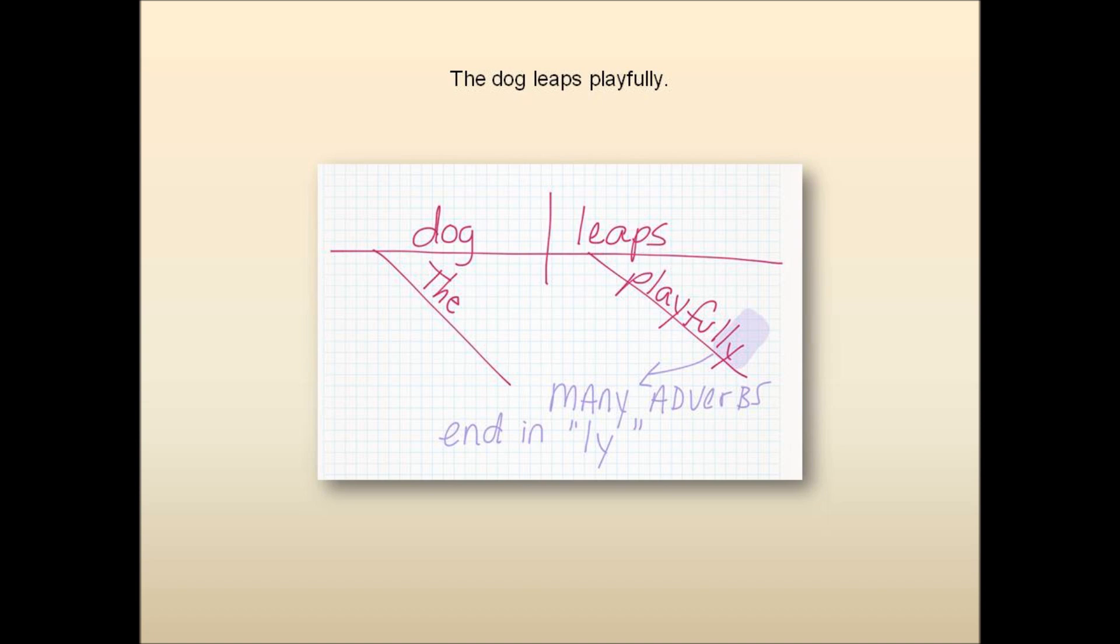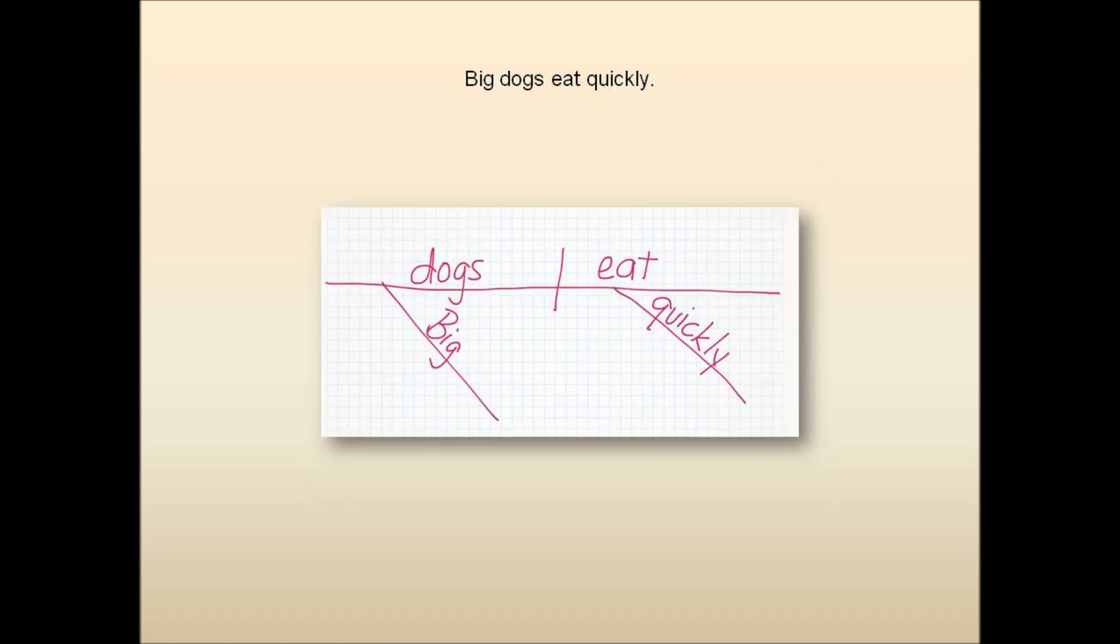Big dogs eat quickly. Dogs is the subject. Eat is the verb. Big describes the dogs. Quickly describes how the dogs eat.